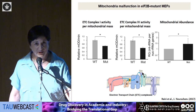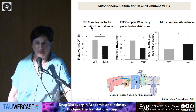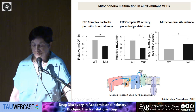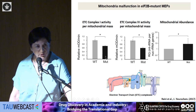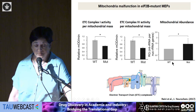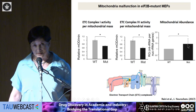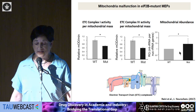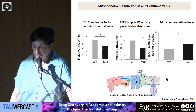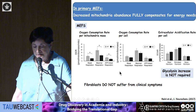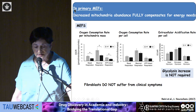We checked enzymatically whether there is less oxidative phosphorylation. Indeed, ETC complex I activity and ETC complex IV activity are both lowered in the mutant cells. Another thing we observed — and were puzzled by — is an increase in mitochondrial abundance in EIF2B mutant cells. We thought this might be a compensatory response to compensate for the energy needs of the cell.